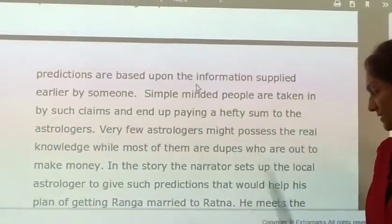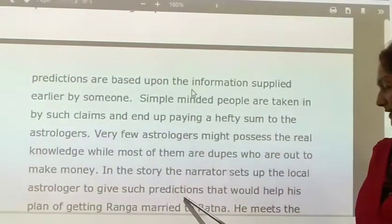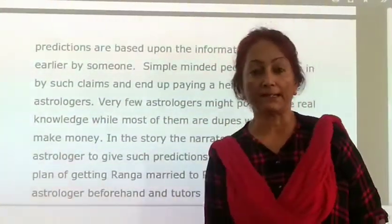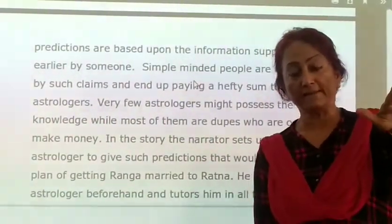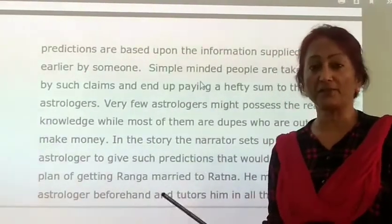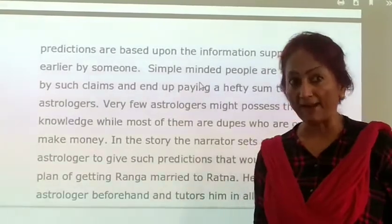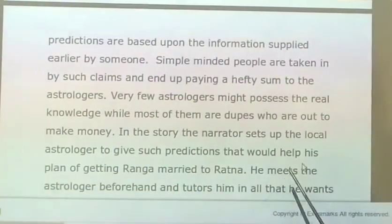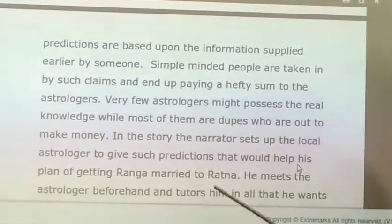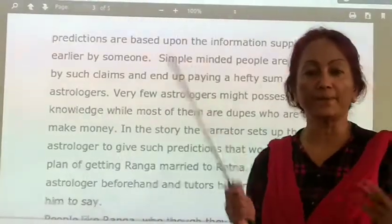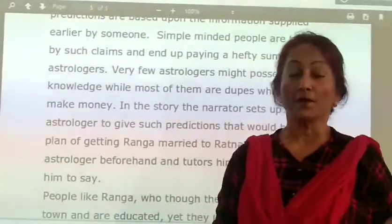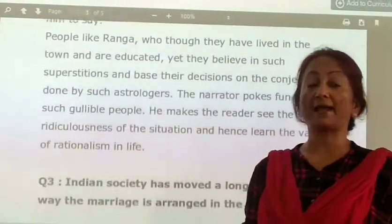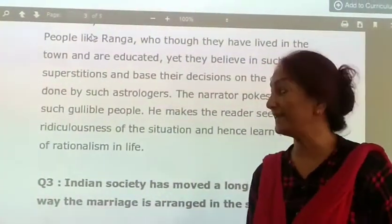In the story, the narrator sets up the local astrologer to give predictions that will help his plan of getting Ranga married to Ratna. That is Shama's plan — he tells everything to the astrologer Shastri beforehand, arranging it so the plan materializes into a marriage. He meets Shastri and tutors him — teaches him what to say — so that Ranga is convinced and agrees to the marriage. That was Shama's intention.